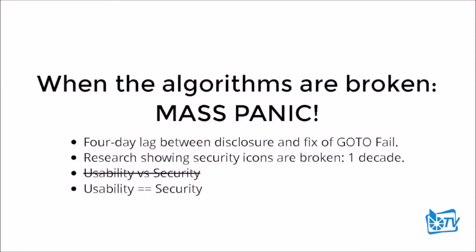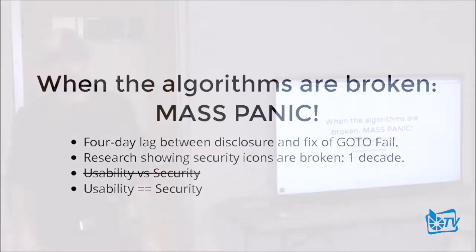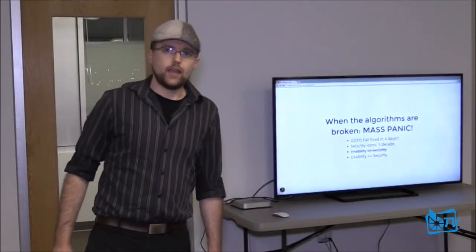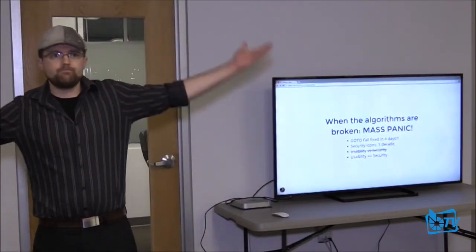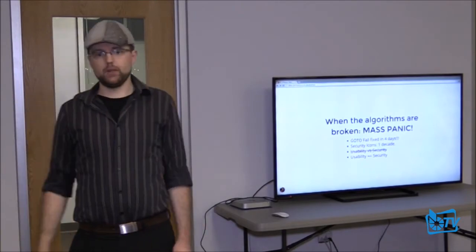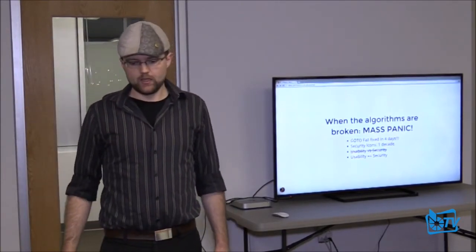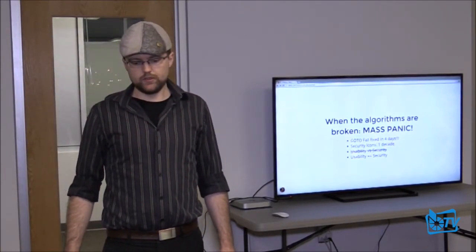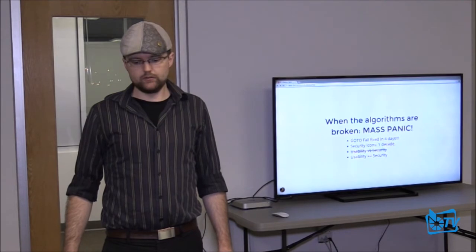What's really irritating is that when algorithms are broken, there's mass panic. When 'goto fail' occurred, Apple had a four-day lag between fixing iOS versions and got a lot of criticism for that. Security icons have been broken for over a decade and we apparently don't give a damn. Usability is security.